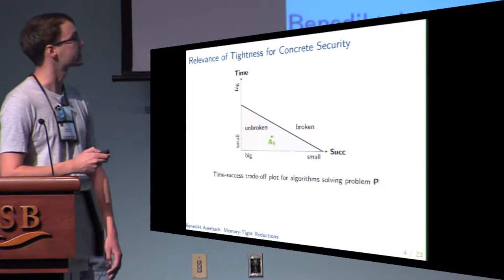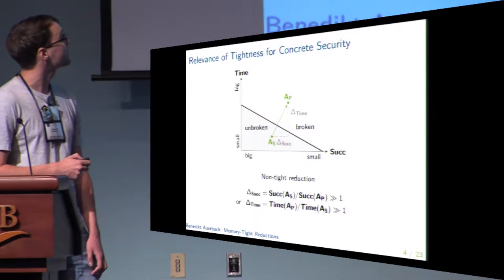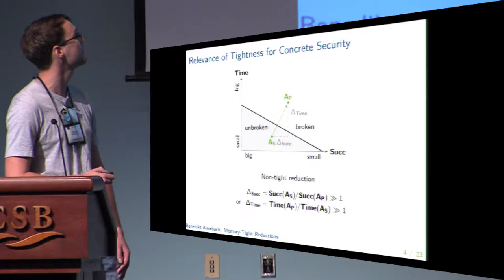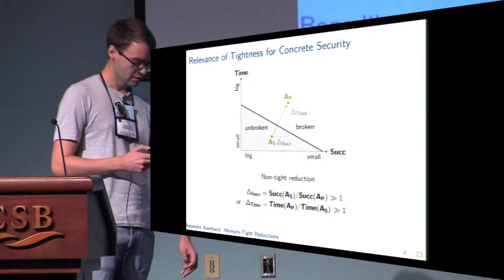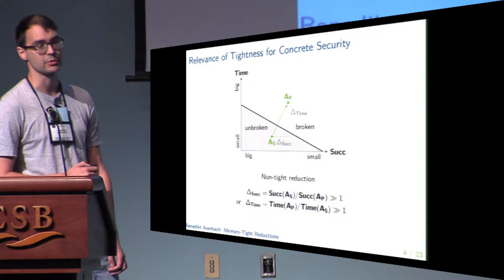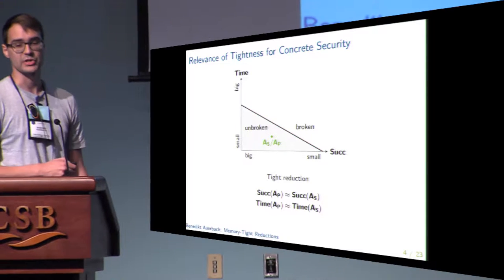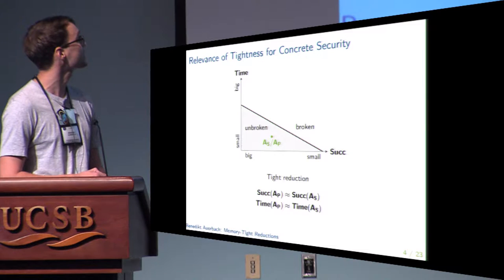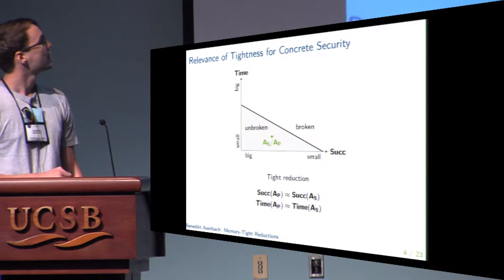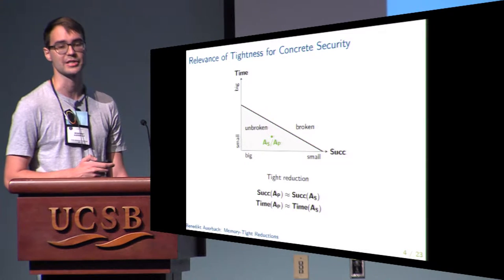By our reduction we know we can turn this adversary into an algorithm solving instances of our problem P. However, if the reduction is non-tight we might end up with an algorithm which runs in considerably higher time and also succeeds with less probability, ending up in the area where our problem is known to be broken. However, if our reduction was tight, we would be able to construct an algorithm outperforming all currently best known algorithms in solving our problem, and in this way we gain trust in the security of our scheme.